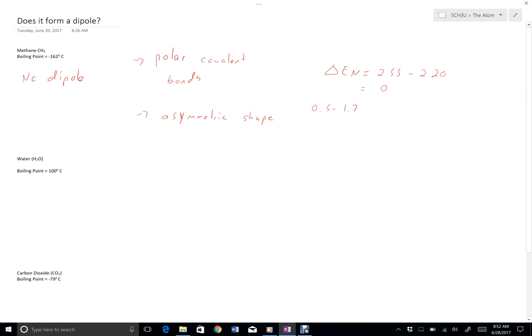So for CH4, I have 2.55 is my electronegativity for carbon and 2.20 my electronegativity for hydrogen, so my electronegativity difference here is 0.35. And that is not in our range. What that means is I do not have polar covalent bonds.